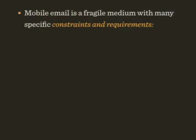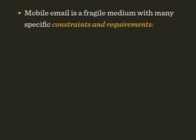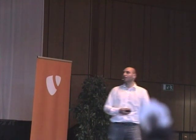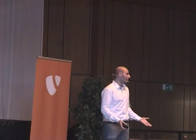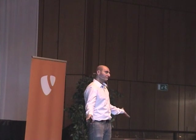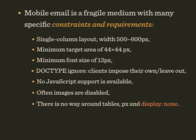Responsive email is a very fragile medium with strange constraints. Usually you stick to 500 to 600 pixels for the layout. Icons and links need to be at least 45×45 pixels for fat fingers. Minimum font size is 13 pixels — on iPhone, if you define 12px it still displays as 13px. Most email clients don't support doctype; they just ignore it and replace it with hard-coded ones. Images are often disabled. There's no way around tables, pixel values, and display:none. This is the worst you can get today.